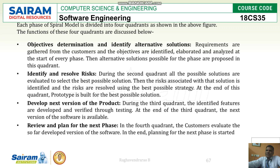For prototyping you can give the solution, then developing the next version of the product — that is the third quadrant where development comes in. You will have crossed all the previous phases and reached the third phase. Different versions are going to be there; you check the previous version, modify things, and testing is also done.